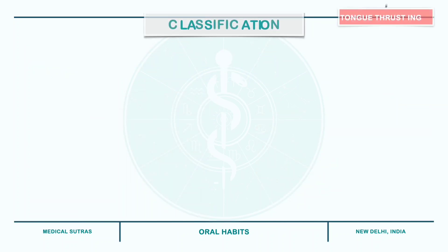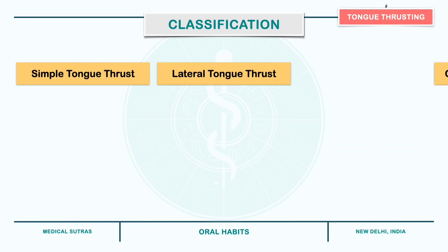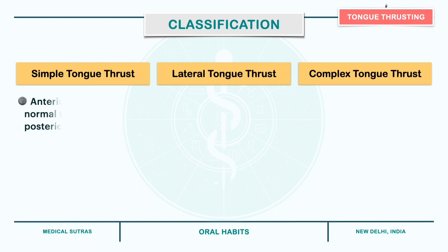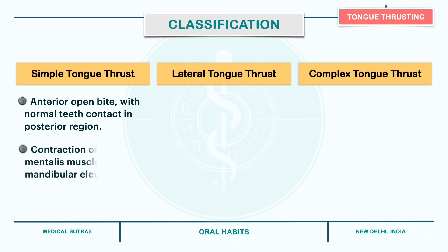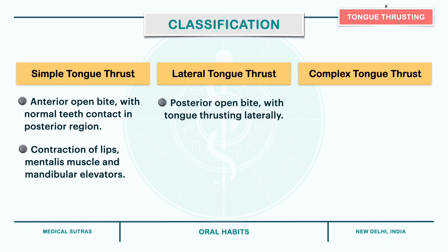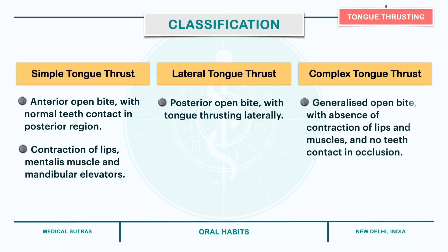Tongue thrusting can be classified into simple, lateral and complex tongue thrust. In simple tongue thrust, there is anterior open bite with normal teeth contact in the posterior region, and there is contraction of lips, mentalis muscle and mandibular elevators. Lateral tongue thrust presents posterior open bite with the tongue thrusting laterally. In complex tongue thrust, there is generalized open bite with absence of contraction of lips and muscles and no contact of teeth in occlusion.